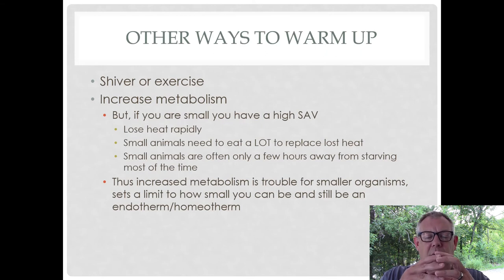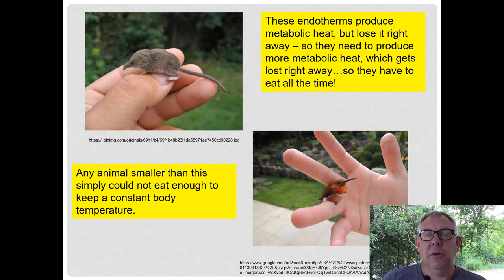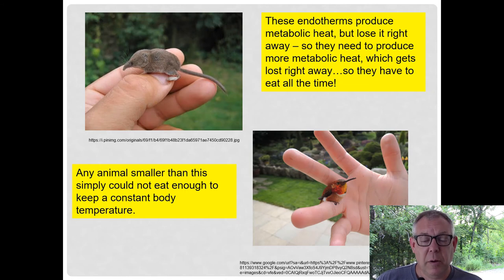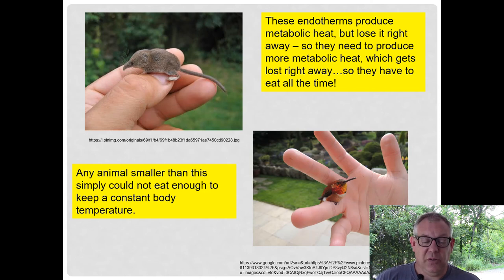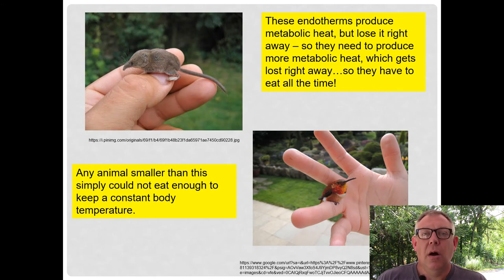The pygmy shrew and the bee hummingbird are probably some of the smallest endotherms you'll find. They produce metabolic heat but lose it right away because of their high surface area to volume ratio. So they need to produce more metabolic heat to keep their body temperature up, but that gets lost right away, meaning they're constantly having to eat all the time. Any animal smaller than this simply would not be able to eat enough — there's just not enough energy. That's why endothermy and homeothermy are more common in larger organisms, while small organisms like insects are all poikilothermic ectotherms.